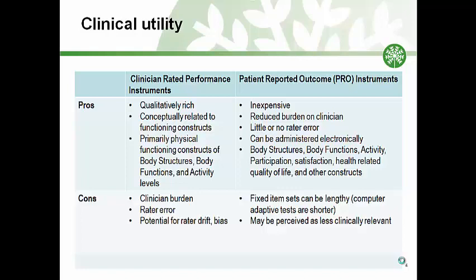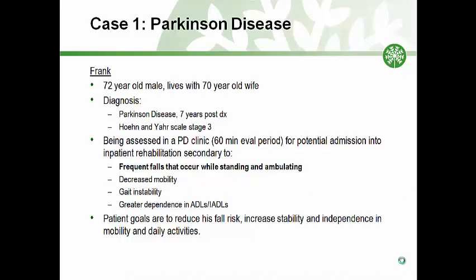Discrepancies between clinicians and patients promote discussion about different perspectives. As we move through this module, we will refer to a patient case and discuss clinical utility and psychometric properties in reference to this patient's case. The patient we will discuss today is Frank. Frank is a 72-year-old male with Parkinson's disease of seven years' duration, classified as Hoehn and Yahr stage 3, which indicates bilateral Parkinson's symptoms with mild to moderate disability and impaired postural reflexes. This stage also indicates that Frank is currently still physically independent but demonstrating increased severity of symptoms. Frank lives independently with his wife, who is 70 years old.